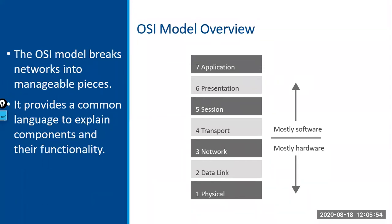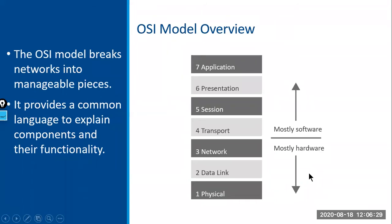The OSI model is very important to understand because it breaks down the networking process into seven layers. It's important to know the OSI model in terms of more than just the names and numbers of these layers — you need to understand the functions associated with each layer, the protocols and standards, how they interact, and how these layers help with the networking process. The bottom three layers are done mostly with hardware; the top ones are done mostly with software. It's used heavily as a learning tool and for troubleshooting and designing networks.